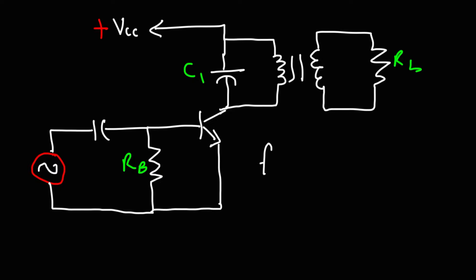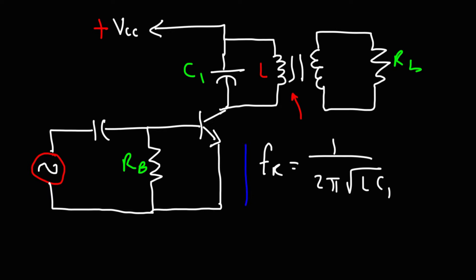The resonant frequency of the tuned circuit is going to be 1 over 2π times the square root of LC — specifically C1 — and you need to find the L value for that side of the transformer. So that's basically it for this video. Now you know the difference between the class A, class AB, class B, and class C amplifier. Thanks for watching.